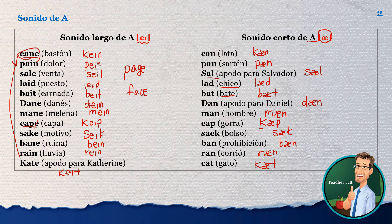Let's review: cane, pain, sail, laid, bait, ate, Dane, man, cape, safe, sake, bane, rain, Kate — those are the long A sound. Then: can, pen, sell, let, bet, den, men, cap, sack, ban, ran, and cat — those are the short vowel sounds.